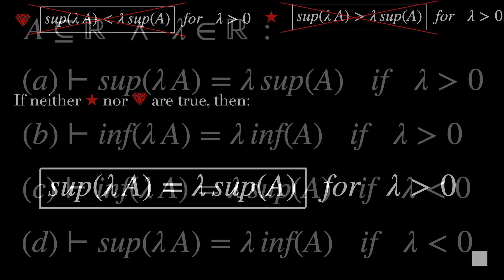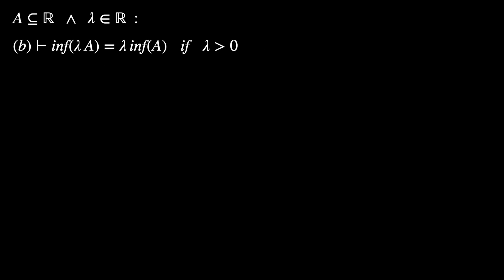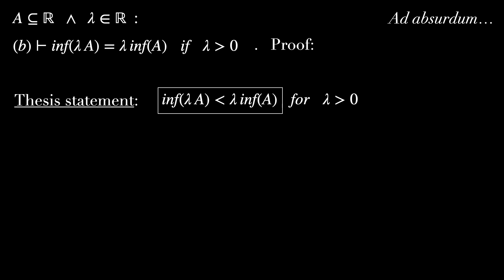Remember, it's only by practicing by yourself that you're going to get better in math. Now let's prove the second result: the infimum of lambda A equals lambda times the infimum of A, as long as lambda is greater than 0. Let's prove it by contradiction as well. Our thesis statement is that the infimum of lambda A is less than lambda infimum of A, for lambda greater than 0 — let's call it the underwear inequality.